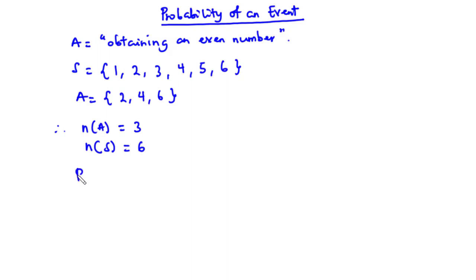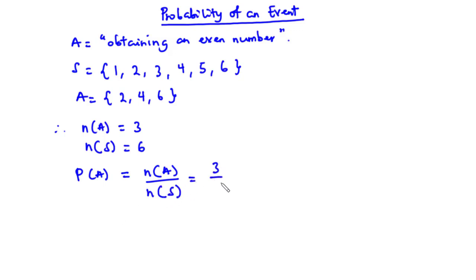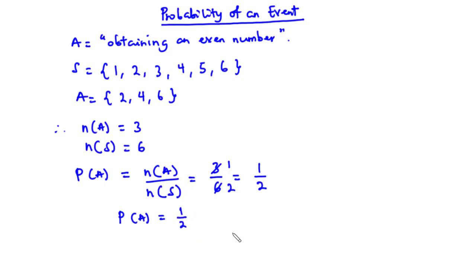In that case, the probability of event A occurring is the number of ways that event A can occur divided by the number of elements in the sample space. This is equal to 3 over 6, which simplifies to 1 over 2. So the probability that event A occurs is 1/2. This is how to find the probability of equally likely events.